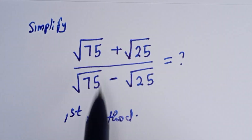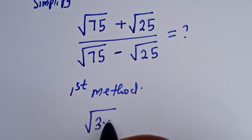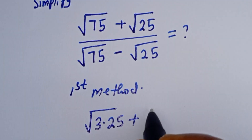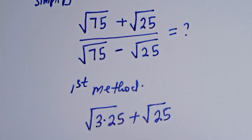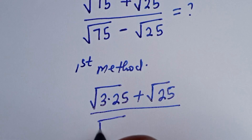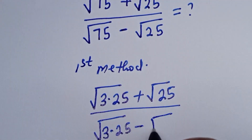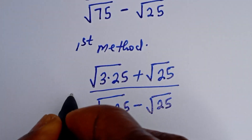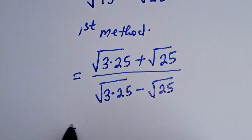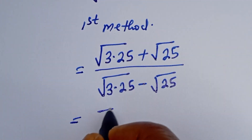Then square root of 75, completing as square root of 25 times square root of 3, plus square root of 25, divided by square root of 75, which is square root of 25 times square root of 3, minus square root of 25. Then this is equal to — if you look at the numerator, square root of 25 is common. Let's bring it out.